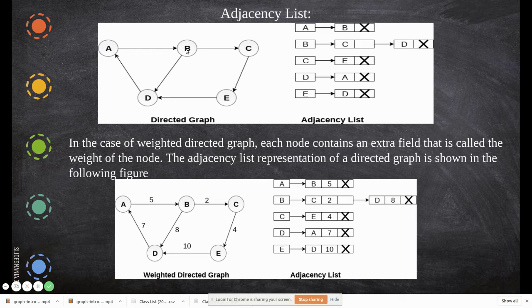So here from A to B. So A to B path is there. Then from B, from B only C and D. This is in degree, so that is not considered. But out degree only will be considered. B to C and B to D. So that's what here given.